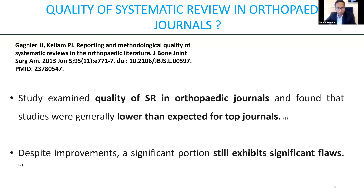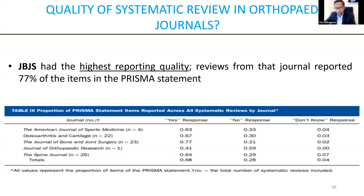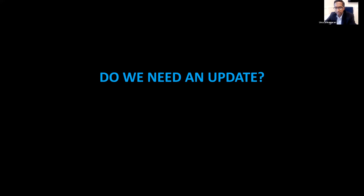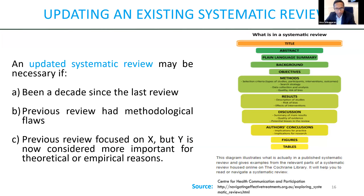When we look at orthopedic journals, there is room for improvement. Back in 2013, looking at the PRISMA statement — a 27-item checklist considered the standard for reporting systematic reviews — JBJS had the highest rate at 77% of those items being included, but all other journals had less than that. There's also consideration for when we need an updated systematic review: if a long period of time has passed, if the rate of publications is so high that more frequent reviews are needed, or if there's a methodologic flaw in a prior review, or if prior reviews didn't focus on the specific outcome of interest.